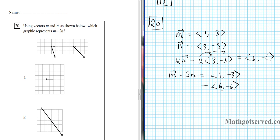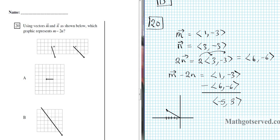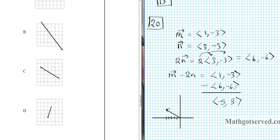Doing the subtraction: 1 minus 6 is negative 5, and negative 3 minus negative 6 is the same as negative 3 plus 6, which is positive 3. So our result is the vector (negative 5, 3). To graph this, we go 5 units to the left and 3 units up. Looking at our options, vector C goes 5 units to the left and 3 units up. So the answer is option letter C.